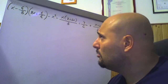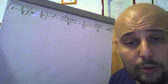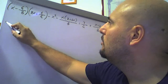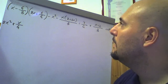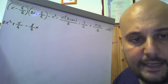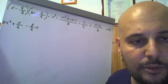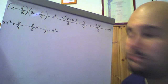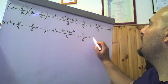Moltiplichiamo (x - 4/3)(2x + 1/4): x per 2x è 2x², x per 1/4 è x/4, meno 4/3 per 2x è -8x/3, meno 4/3 per 1/4 è -4/12 cioè -1/3. Poi meno x² meno [x(2+3x)]/3: sciogliamo la parentesi scrivendo 2x più 3x² il tutto fratto 3. Uguale 7/4 più (x+2)/3.